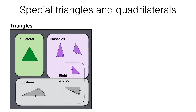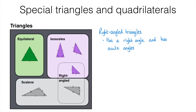Next we have a very important type of triangle that overlaps the categories we have already covered — right-angled triangles. A right-angled triangle must have a right angle in it. Because angles in a triangle add up to 180 degrees and a right angle is 90 degrees, the other two angles must also add up to 90 degrees, meaning both are acute. A right-angled triangle could also be isosceles. Here is an example: we have a right angle of 90 degrees and two edges of the same length, which means two equal angles — in this case both 45 degrees so all three angles add up to 180.